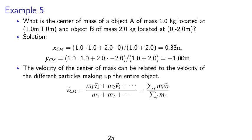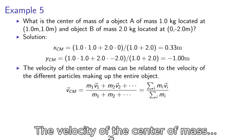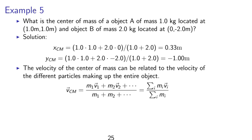The velocity of the center of mass may be related to the velocity of the different particles making up the entire object. So we have vcm as sigma i mi times vi divided by sigma mi, where sigma mi is simply the total mass.